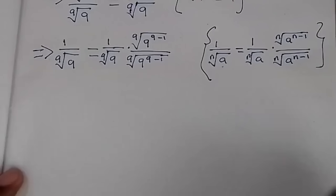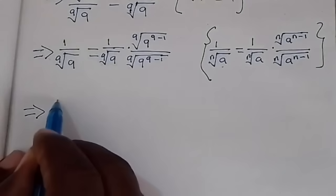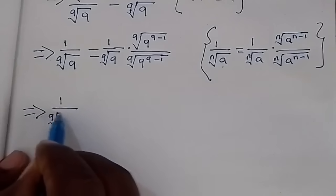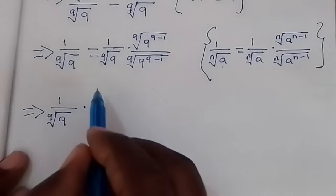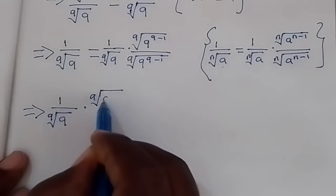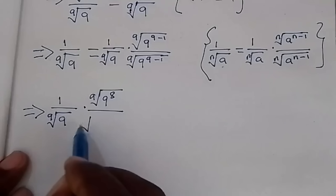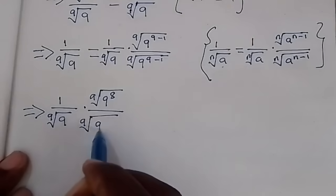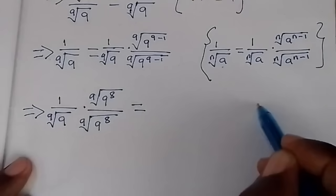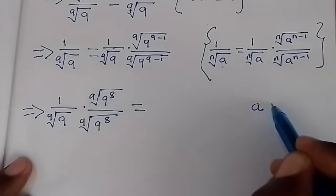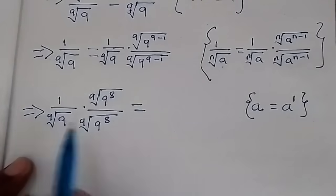This simplifies as follows: we have 1 over the 9th root of 9, and since 9 minus 1 equals 8, we have the 9th root of 9 to power 8 in both numerator and denominator. We also apply the rule that a is the same as a raised to power 1.